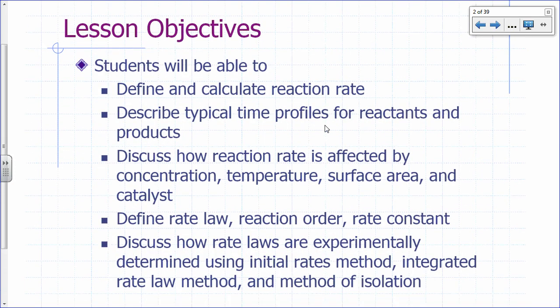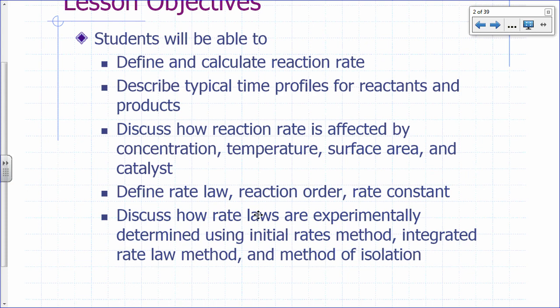After this lesson, you should be able to define and calculate reaction rate, describe typical time profiles for reactants and products during the course of a reaction, discuss how reaction rate is affected by concentration, temperature, surface area, and catalyst, define what a rate law is, what a reaction order is, what a rate constant is, and discuss how rate laws are experimentally determined using the initial rates method, the integrated rate law method, and the method of isolation.